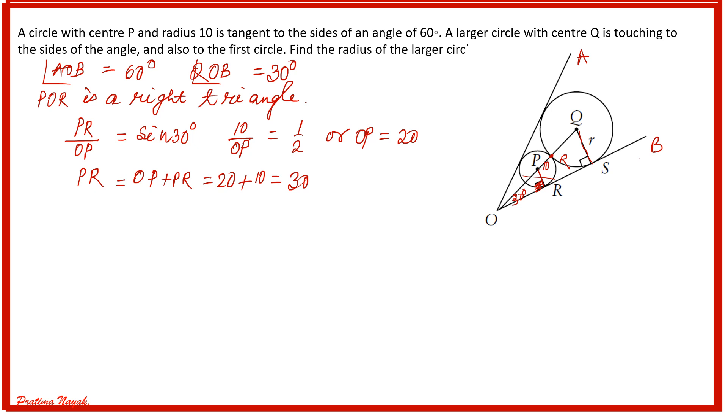Next, coming to OQ. OQ is equal to OP plus PR plus RQ. RQ is nothing but small r. So it will be 30 plus r. Now let us observe triangle OQS. In triangle OQS, this is a right triangle because angle S is 90 degrees.